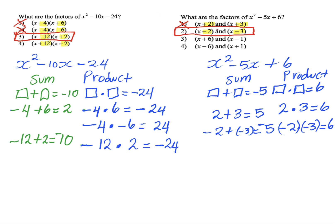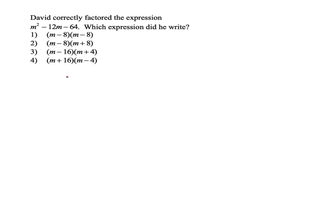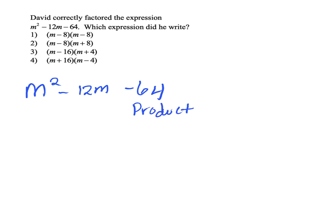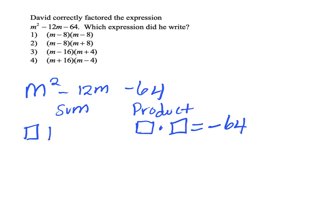These are not difficult. We're just using the strategy of working backwards and using our answers. Let's try the last question: David correctly factored the expression m squared minus 12m minus 64. Which expression did he write? The negative 64 represents the product and negative 12 represents the sum. I'm looking for two factors that multiply to negative 64 and add to negative 12.